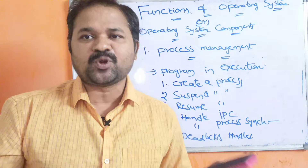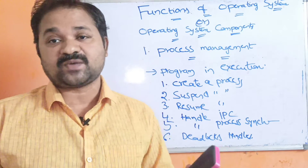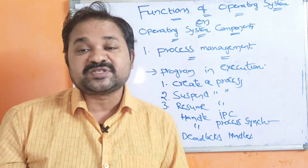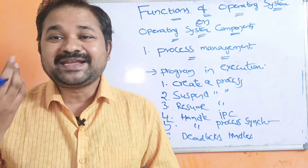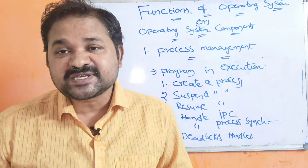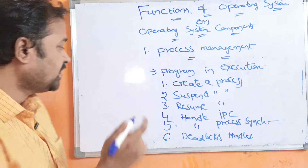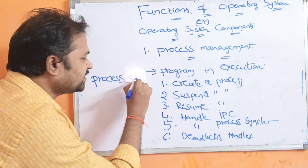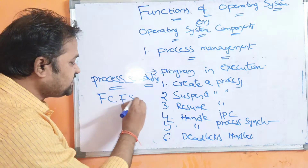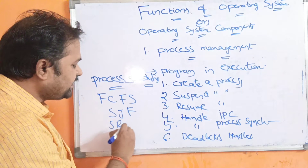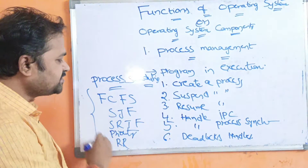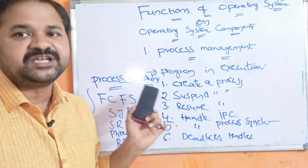Nowadays we use multi-programming systems, where multiple processes reside in main memory simultaneously. The operating system must decide which process to execute first and in what order — this is determined by process scheduling algorithms. We have different types of scheduling algorithms such as FCFS, SJF, Shortest Remaining Time First (SRTF), priority scheduling, and round-robin scheduling. Using these algorithms, the operating system decides the order in which processes are executed.